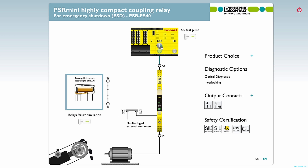Now let's see what happens when we have an internal relay failure. We try to switch on, but the relay detects the failure and locks itself. As you can see, the load is not moving.